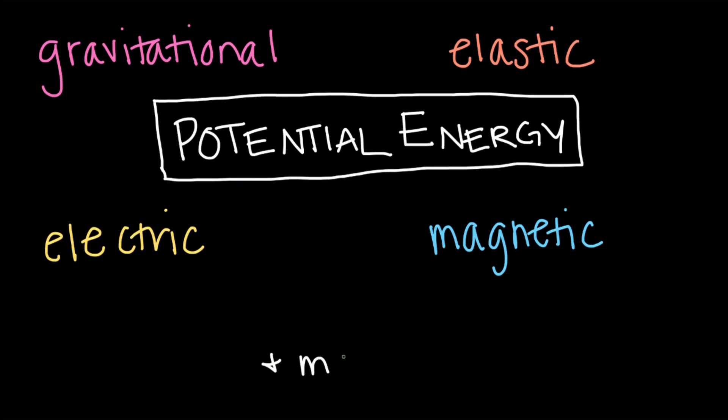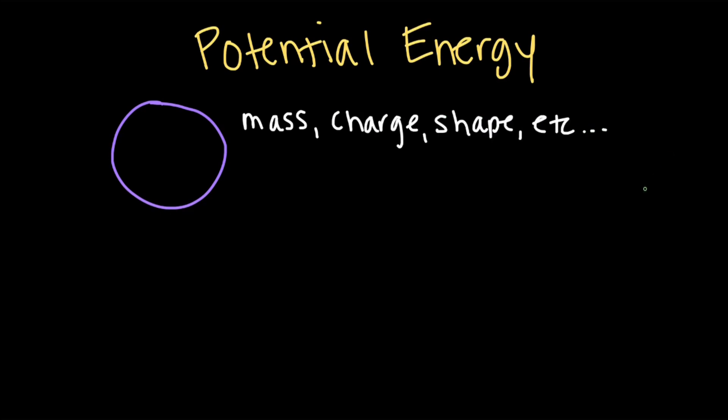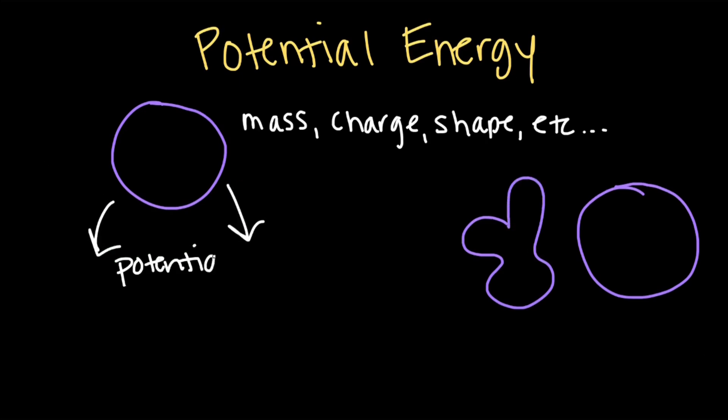And these are just a few of the most common types of potential energy, but there are more. In summary, potential energy is the stored energy in an object due to its position, its properties, and the forces acting on it. Potential energy is measured relative to some comparison position or shape, and describes the potential for other forms of energy, commonly kinetic energy from motion, to exist.